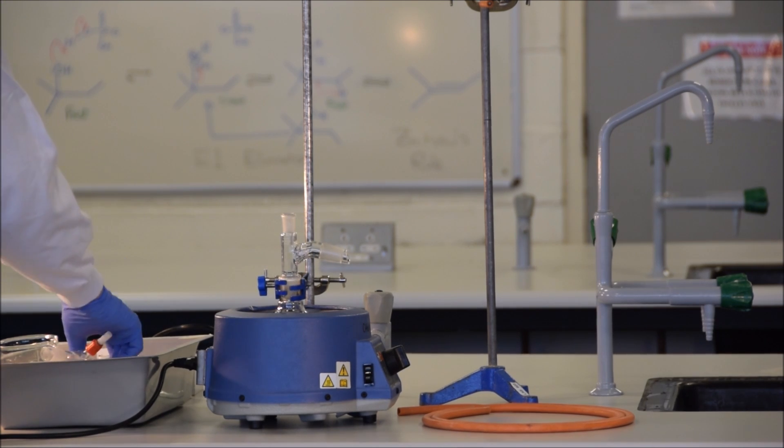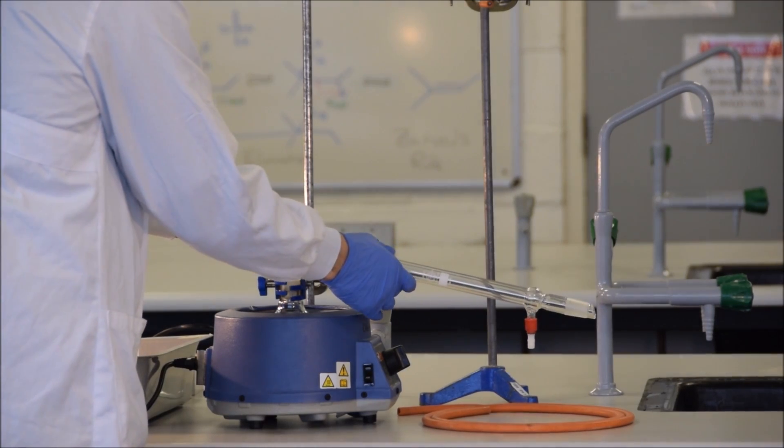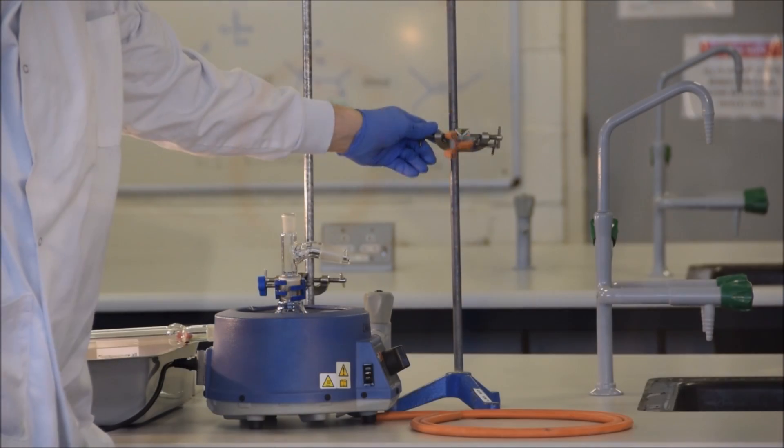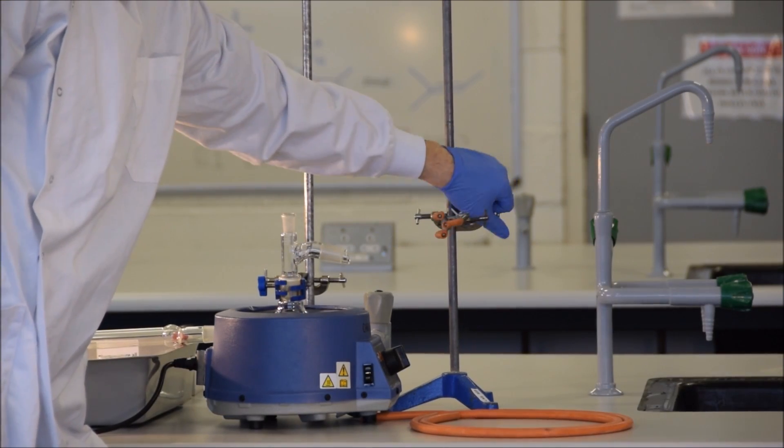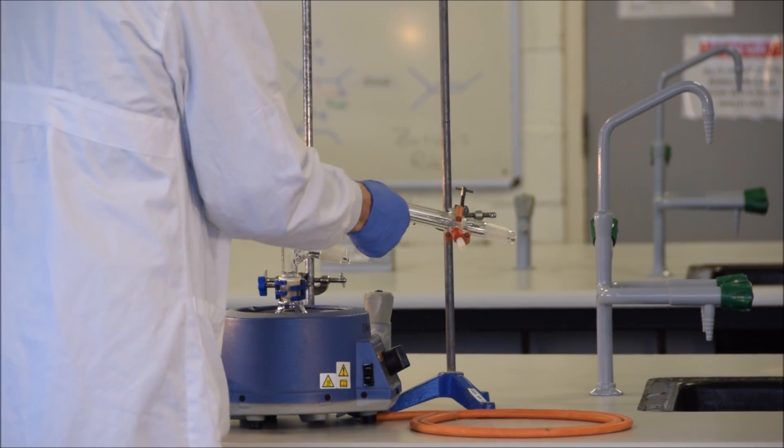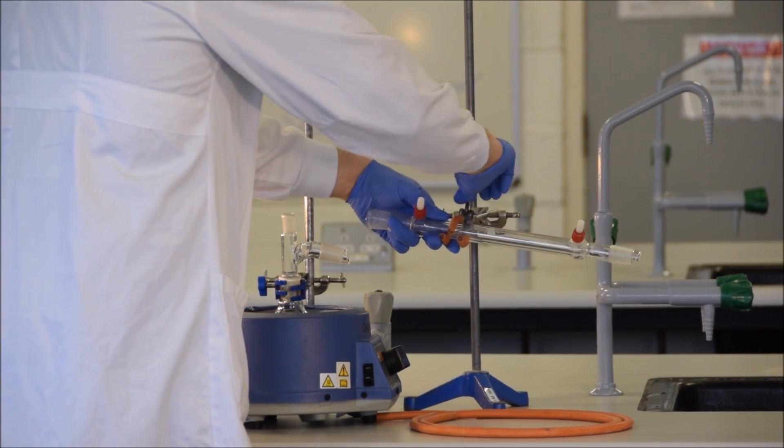Next, I put in the still head. Following the still head, I put in the Liebig condenser. You'll notice now that the Liebig condenser will need to be supported by another clamp. So again, we follow the same procedure. Loosen all three screws. Securely clamp your piece of glassware, and then adjust the distance and the height of the piece of glassware, so that it is held securely in the correct position.